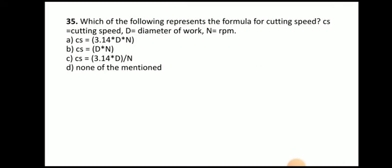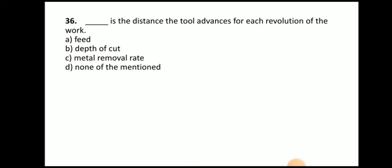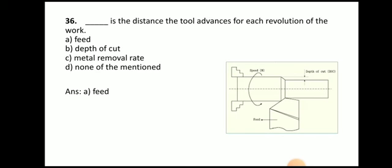Next question: which formula represents cutting speed? The answer is cutting speed = π·D·N, where D is the diameter and N is the RPM. Next question: what is the distance the tool advances for each revolution of the work? The answer is feed. Feed is the distance the tool advances for each revolution of the work.